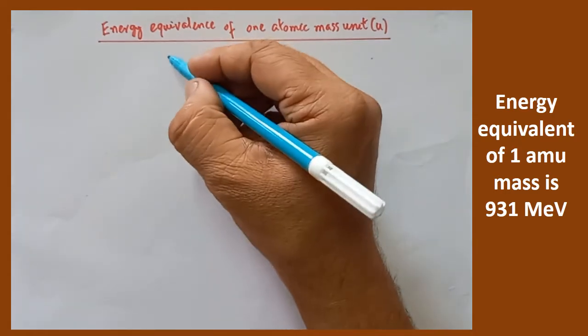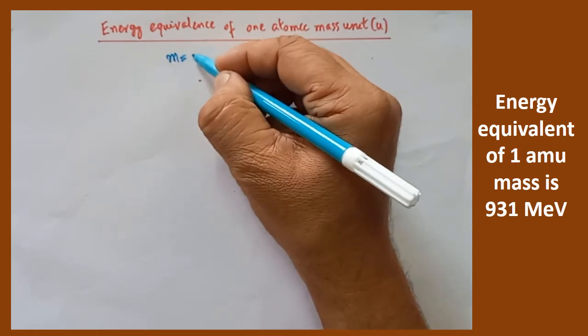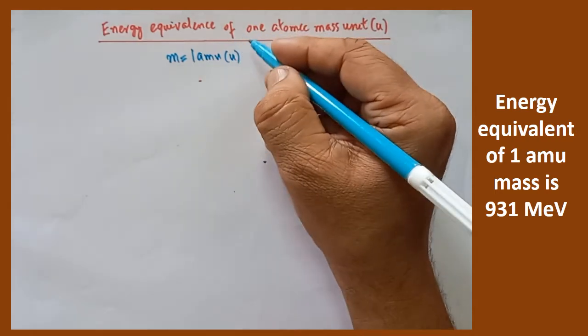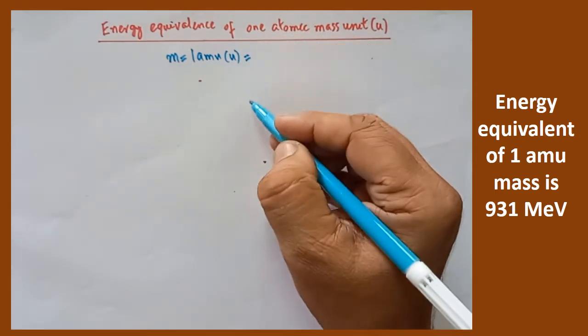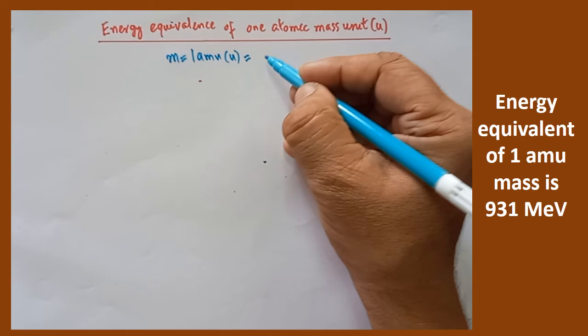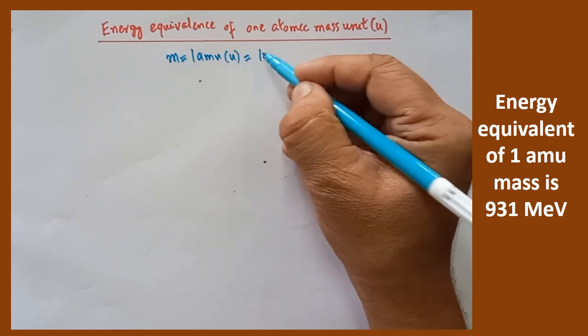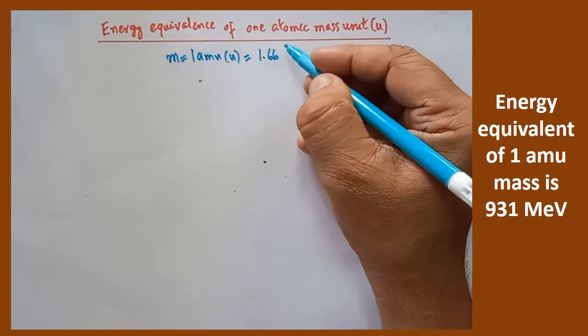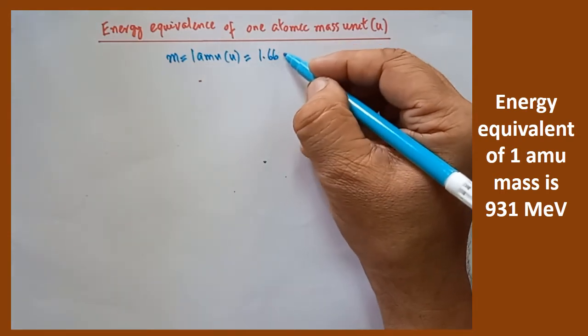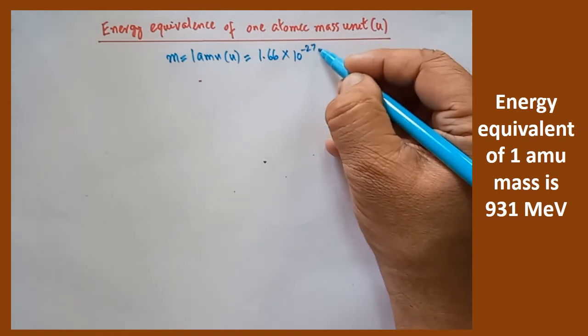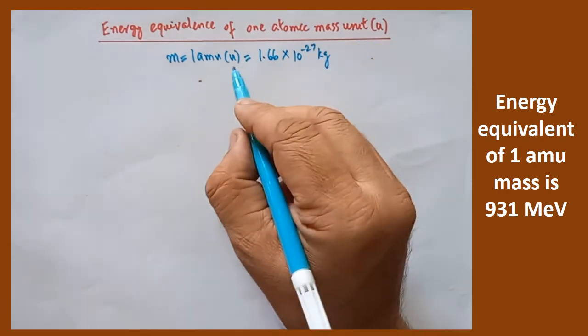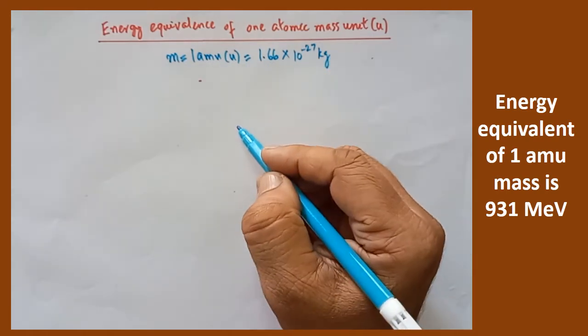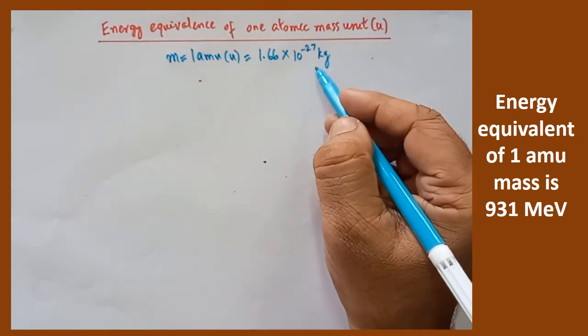Here first you should know what is the mass given here, one atomic mass unit, that is simply written as u. Its value in terms of kg must be known. The 1 amu is equivalent to 1.66 into 10 to the power of minus 27 kg. So this is the equal value of mass in terms of kg, because we are using SI system.